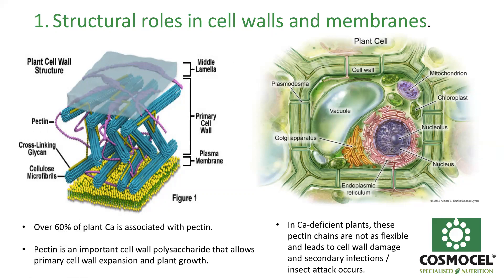One of the very important roles of calcium is in the cell membrane. We have what we call the epidermis of the cell. Obviously we have the cell wall, which is a rigid structure, and inside the cell wall we have our cell membrane, which is a fluid or movable structure that can change its shape and move inside the plant, while the cell wall remains rigid.